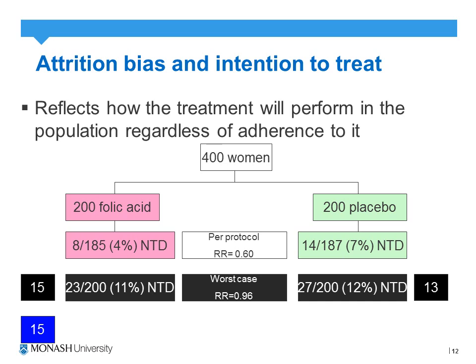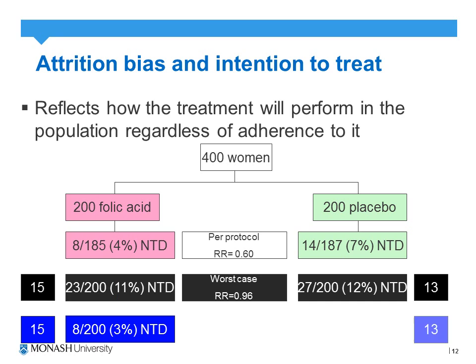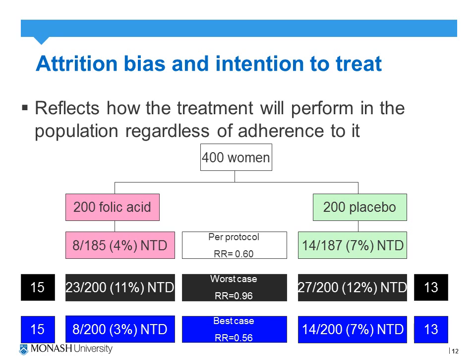Taking the opposite approach with the best-case scenario, we assume the 15 patients who dropped out from the intervention group were fine, so it becomes 8 out of 200 with an NTD-affected pregnancy. Likewise on the placebo side, we assume the 13 who dropped out were also fine. Calculating the best-case intention-to-treat relative risk gives 0.56. Intention-to-treat analysis gives flexibility in interpreting results when there are dropouts, illustrating how the apparent effect can vary considerably.